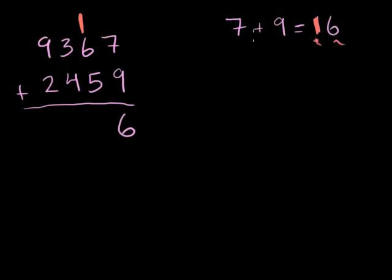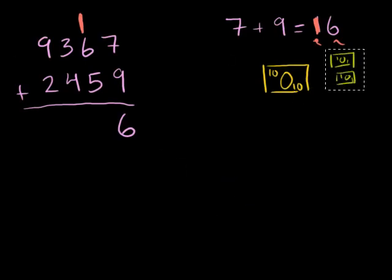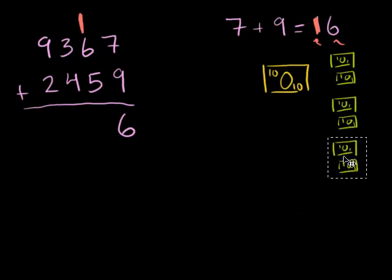If you view this as money, what's the best way to get $16 in a world where there weren't $5 bills, where you only had $1 bills, $10 bills, $100 bills, and so on, only multiples of 10? In that world, you would represent 16 as one $10 bill, just like that, and then six $1 bills. The whole reason why I'm drawing it this way, or using this analogy or drawing the dollar bills, is to show you what these places mean.